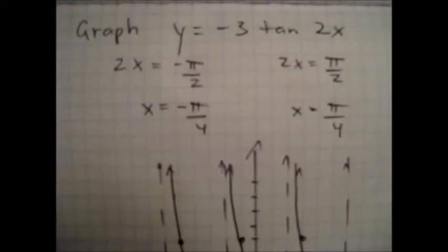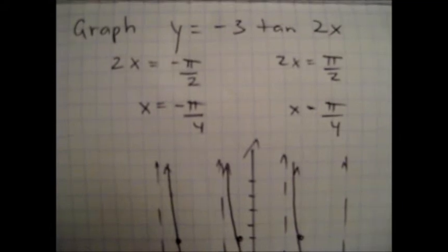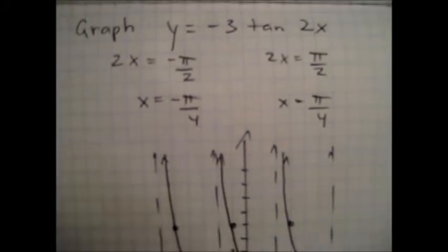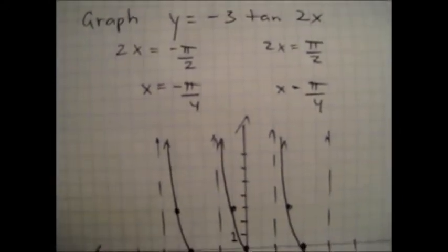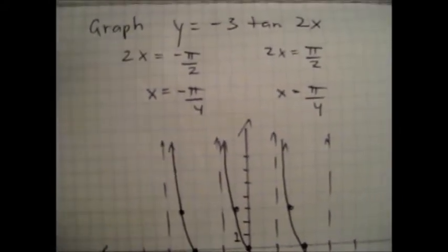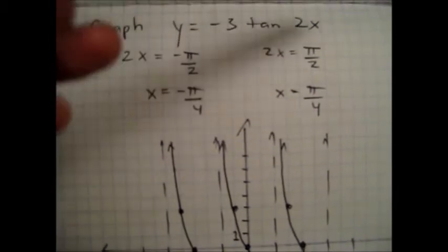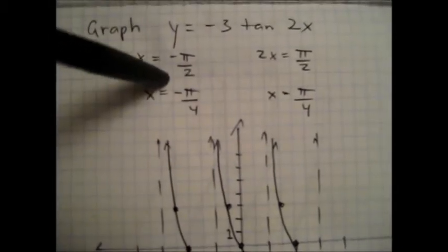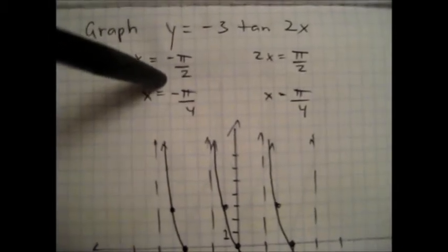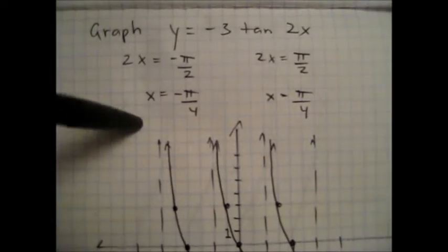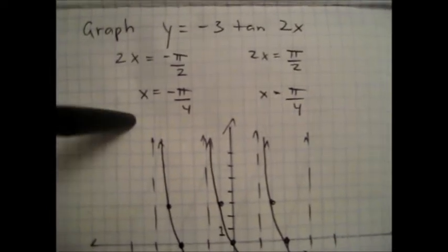Here's another example: graph y equals negative three tan(2x). You'll want to do the same thing and find the asymptotes again, so we'll take this 2x and put it through the equation. Set them equal to negative pi over two and pi over two. Then you'll get negative pi over four and pi over four.